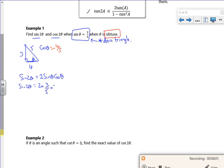Minus 4 fifths times by minus 4 fifths. So sine 2 theta will be, what's that going to be? Minus 24 over 25. Is it? Yeah.